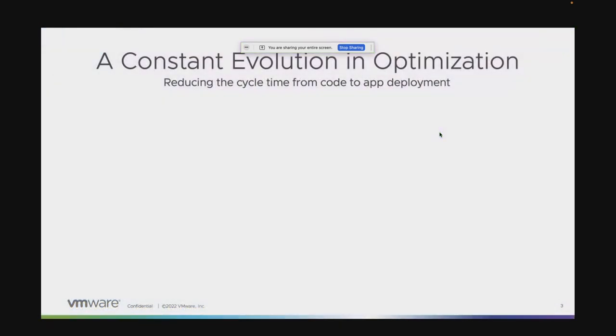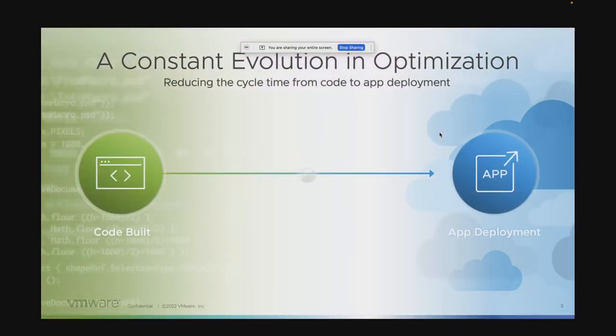This is really about optimizing the time it took from applications being written or coded and then them being deployed. Whether it was DevOps, cloud computing, chef puppet recipes, infrastructure — it has always been about optimizing the cycle time between an application being written and an application being deployed.